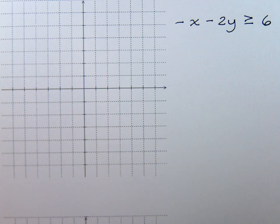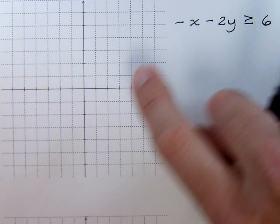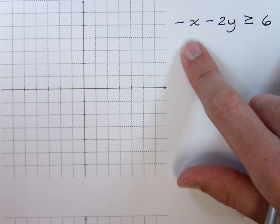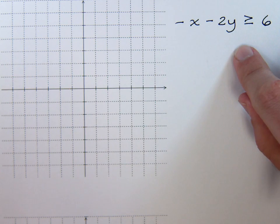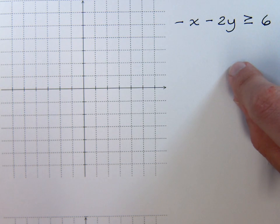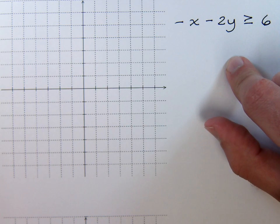Here we have another linear inequality in two variables. Now you can graph this just like an equation, and perhaps you want to do that—go ahead and find the x and y intercepts, wouldn't be that bad. But we still are going to have to solve for y so we know if we're going to shade above or below. At least I think that's a pretty safe way of doing this.